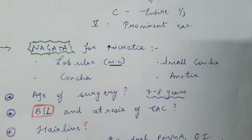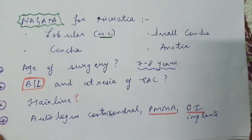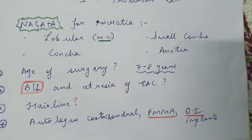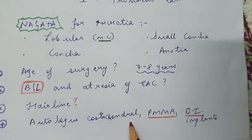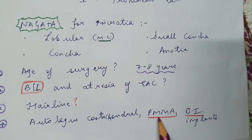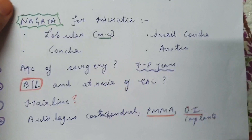The options available for ear reconstruction are: the most commonly and widely used autologous costochondral cartilage framework reconstruction, Medpore implants such as polymethyl methacrylate, and osteointegrated implants.